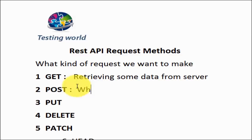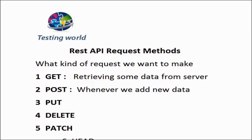So whenever we add new data or a new resource to the server, we use POST. In this course we are going to use the Jira API, so I'll take an example from Jira — a bug tracking tool. Whenever we want to get details of any bug, we use GET. But whenever we want to add a new bug to Jira, we use POST.